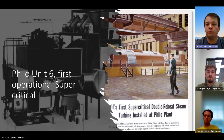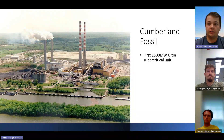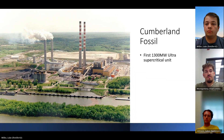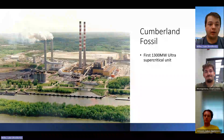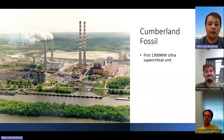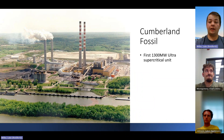Unit 6 at Philo was later decommissioned in 1975 due to differing power needs during the recession. Another important supercritical plant is Cumberland Fossil here in Tennessee, brought online in 1972. It was the first of the 1300 megawatt units, also made by Babcock and Wilcox, and was the most efficient at the time. It has two units making a total of 2600 megawatts. It is still operating but is set to be decommissioned in 2027 due to pollution concerns from coal power.